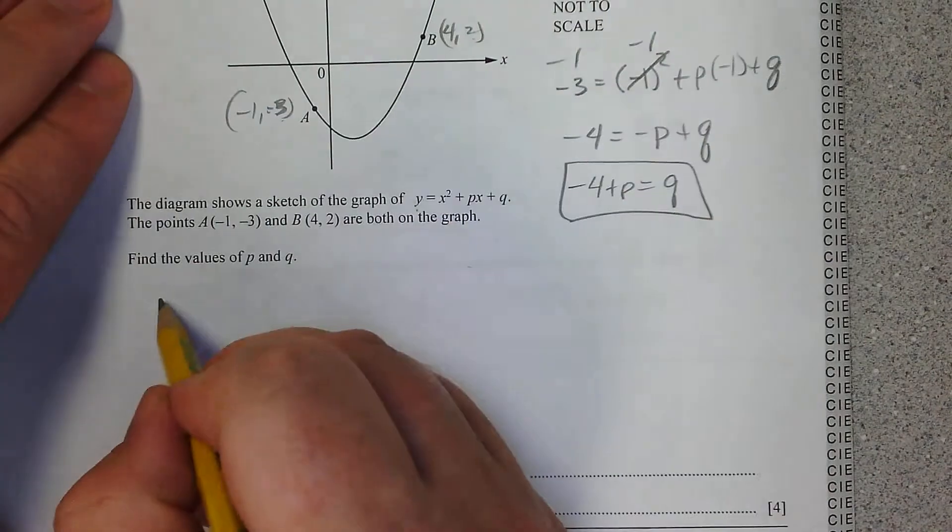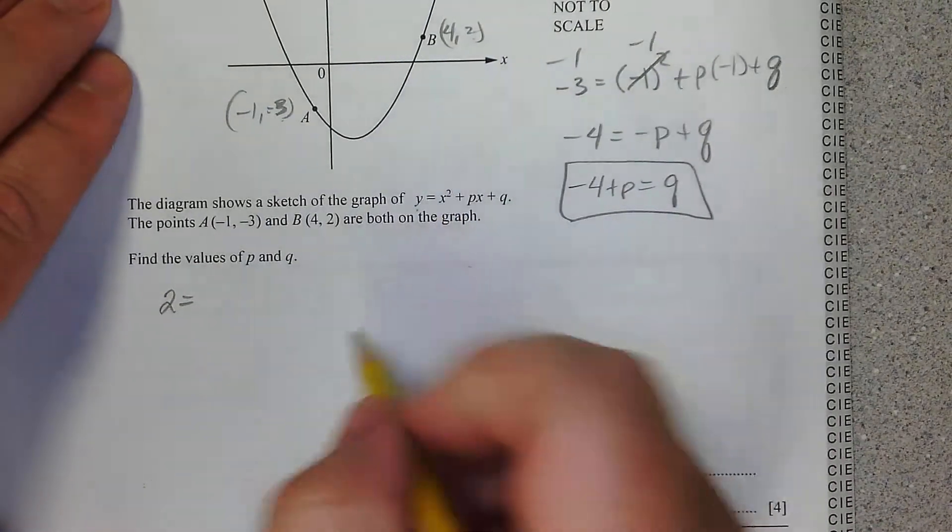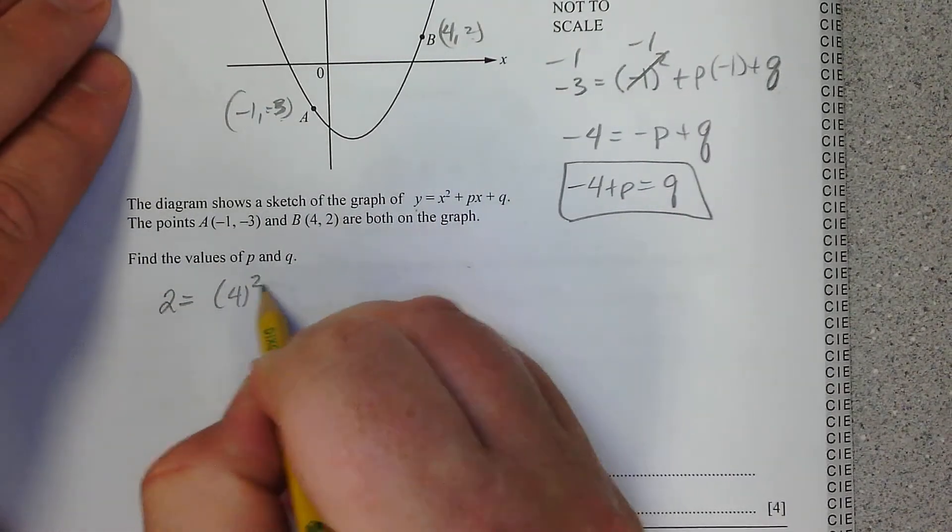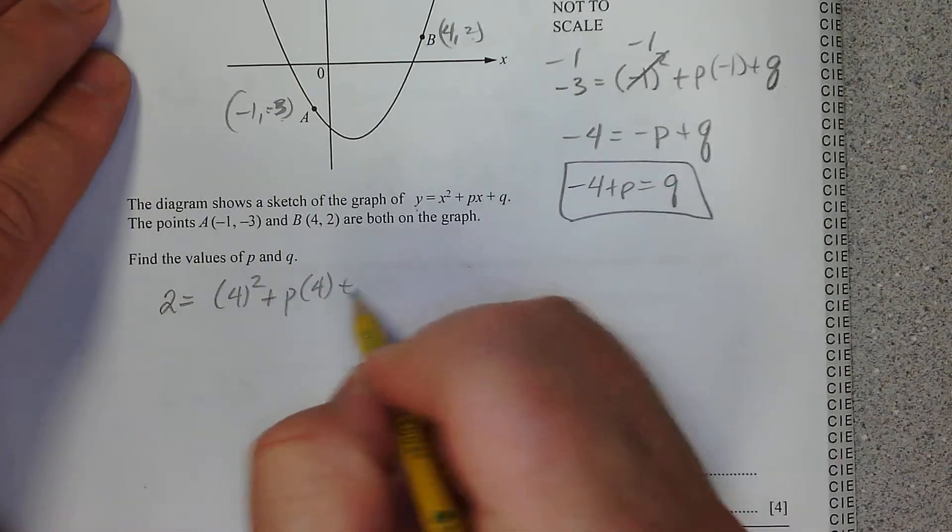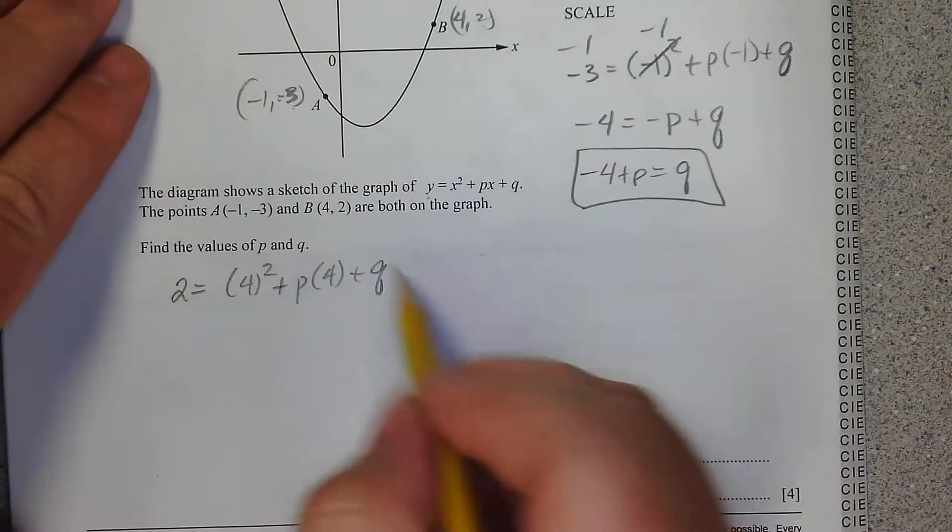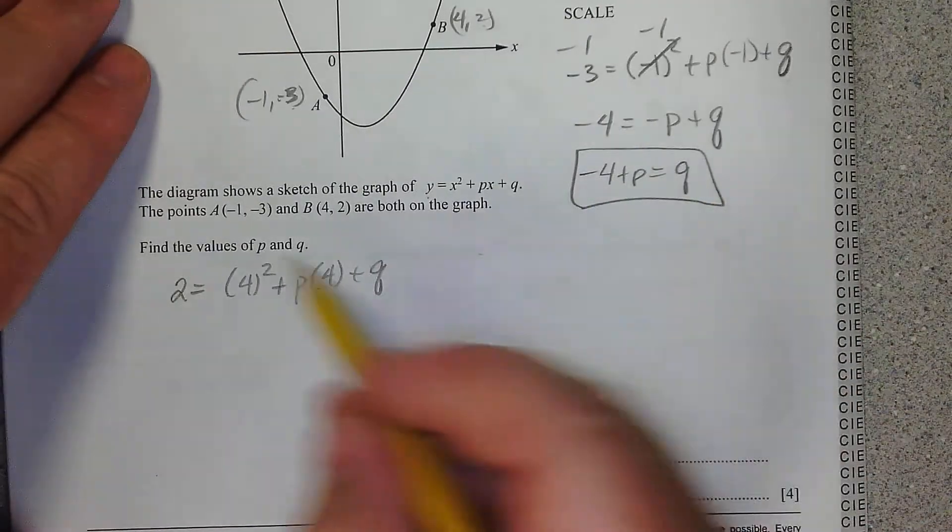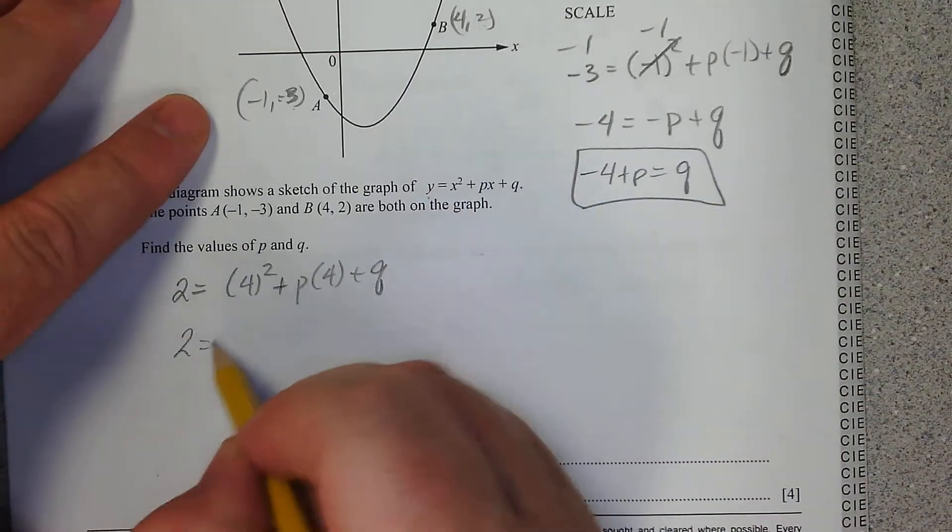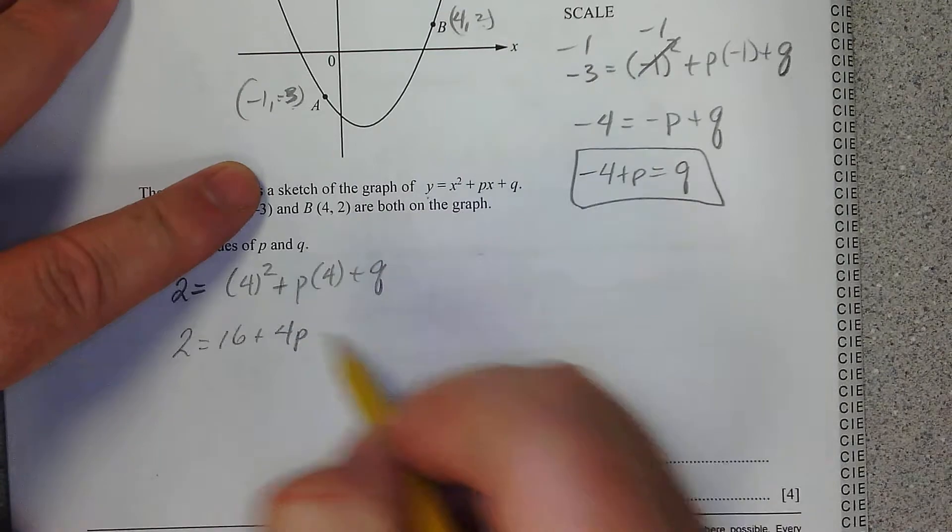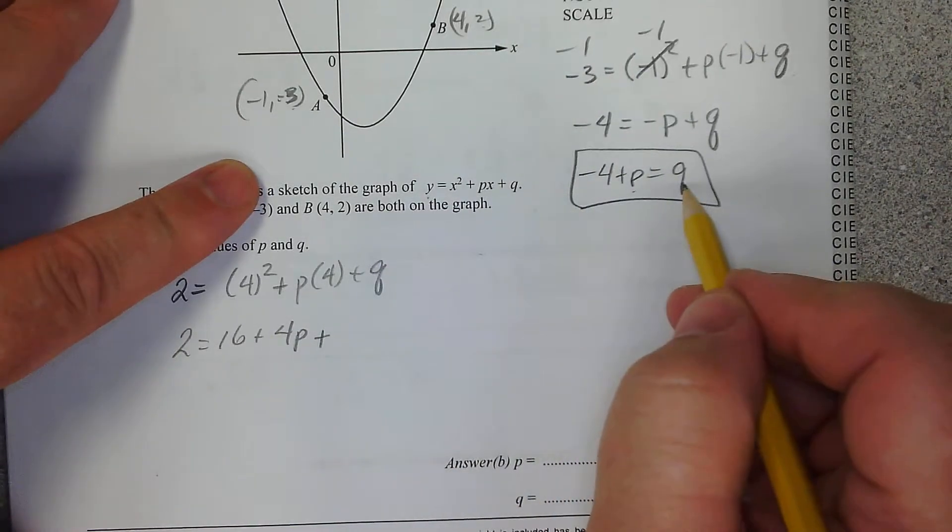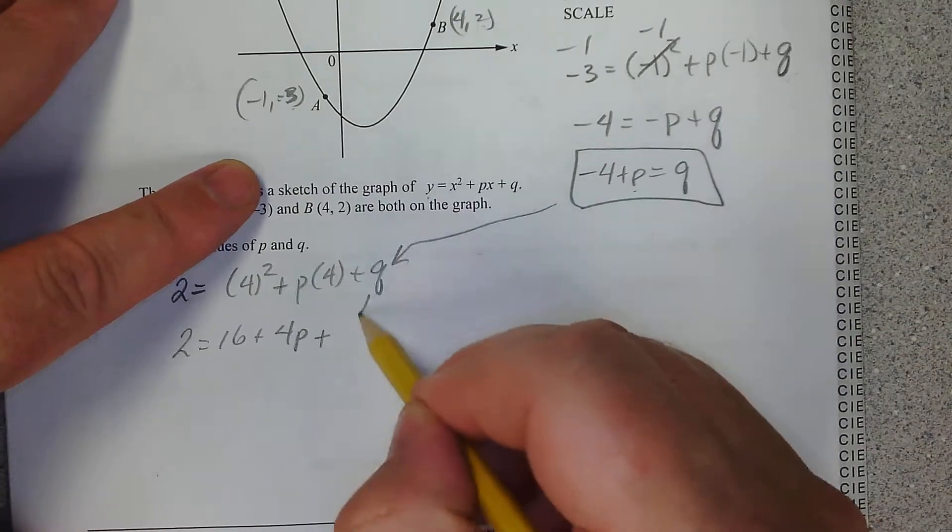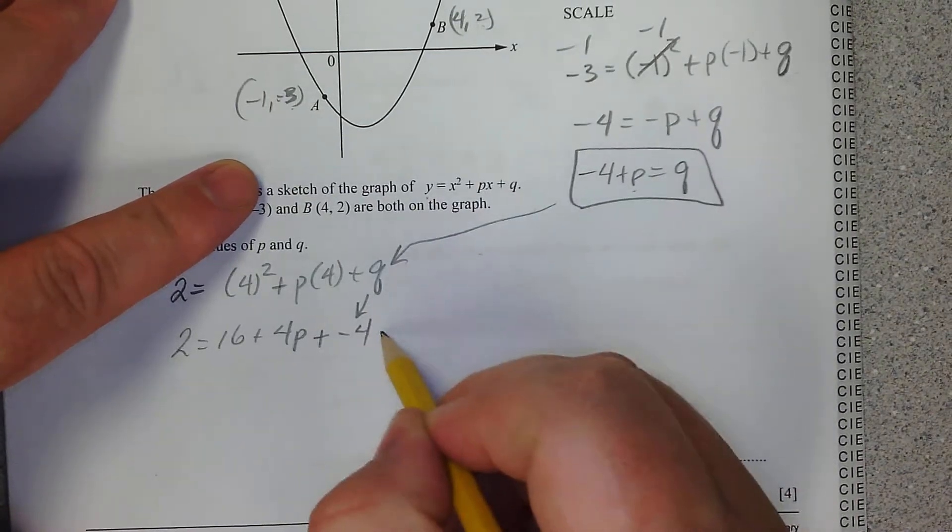Now let's do the same thing for the other one. So here's what we got. When y is 2, x is 4. It's plus p times 4 plus q. So this is going to be 2 equals 16 plus 4p plus q. Now here's the thing: q is equal to this, so I'm going to put that right there, which is minus 4 plus p.